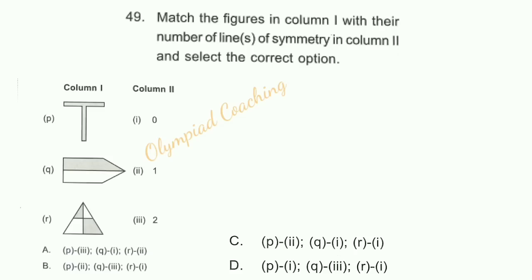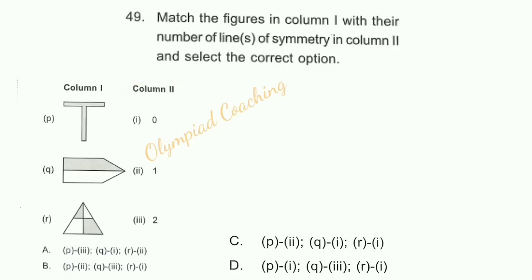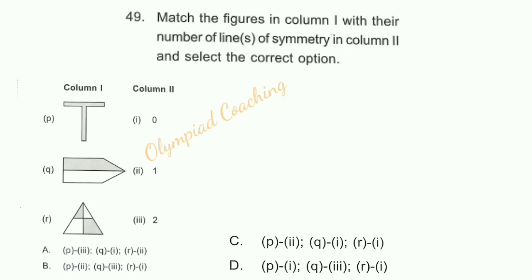Question number 49: Match the figures in column 1 with their number of lines of symmetry in column 2 and select the correct option. Column 1 is figures; column 2 is number of lines of symmetry. P — we can draw a line of symmetry, so P matches with 2. Q — we cannot draw a line of symmetry on Q, so Q matches with 0. Similarly, R also has 0 lines of symmetry. So option C is correct: P matches with 2, and Q and R match with 0.